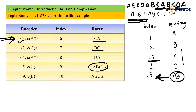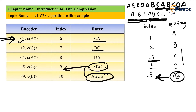After this, A is present again. AB is also present at index 5. ABC is also present in the entry column. So the next series combination is ABCE, which is not present in a previous entry. So ABCE will be the new entry. The maximum match of characters is ABC, which is present at index 9. So write index 9, and the last character of the entry is E — codeword of E. Hence the encoded output is (9, C of E).